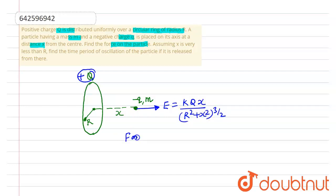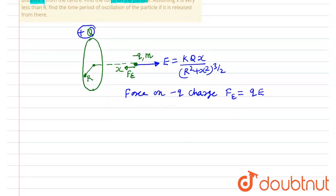So force on minus q charge will be equal to q into E. The direction of force will be towards this direction since charge is negative. So force will be equal to q into kQx upon (R² + x²)^(3/2). So this is the first answer.